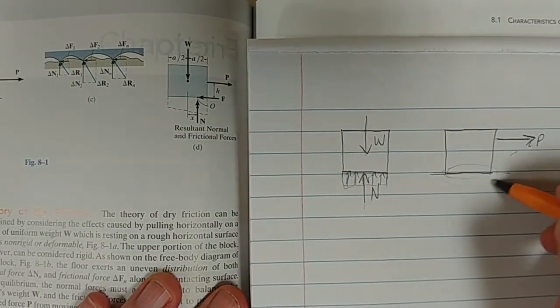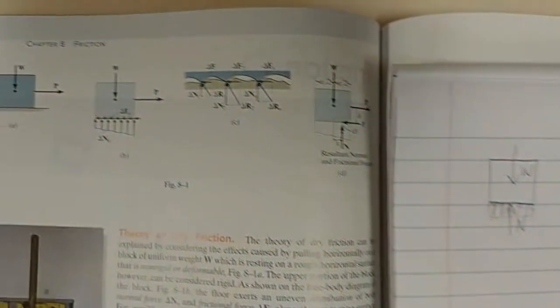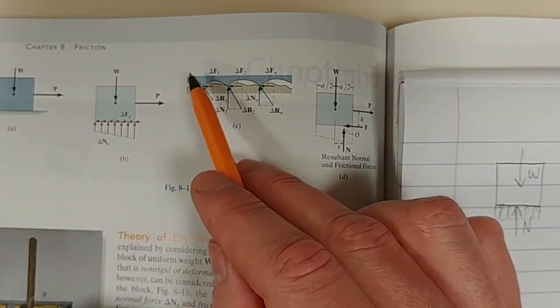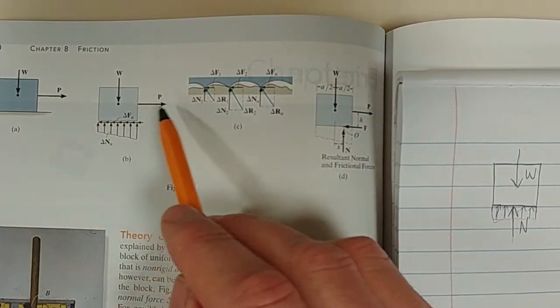At the interaction between the two surfaces, actually what's happening is you've got these little irregularities, let's call it bumps, on the top surface and bumps on the bottom surface. And as you pull, as you begin to pull that body to the one side...